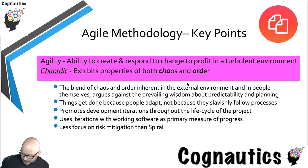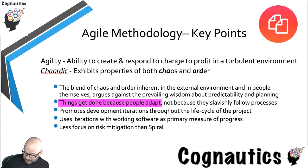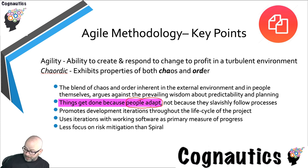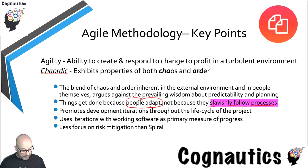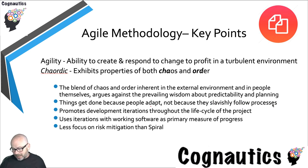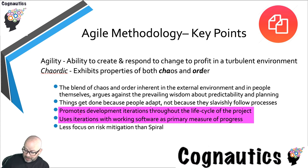Something else underpinning agile — and there's an agile manifesto which we're going to look at shortly — is the idea that things get done because people adapt. People change, and that is a key part of the agile methodology. It's people changing that makes things work, rather than people slavishly following processes and protocols, which is something they obviously do in the waterfall method. Like the spiral methodology, the agile methodology uses iterations.